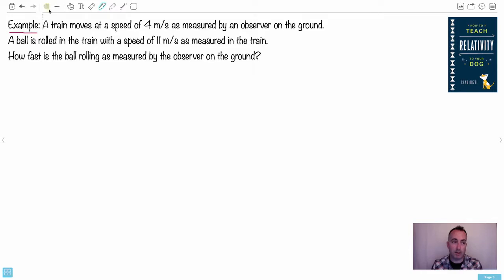So I want to show you an example, the world's most boring example. Let's do it with a train. I like this - how to teach relativity to your dog. So let's say we've got a train here. It's moving at a speed of 4 meters per second, as measured by an observer on the ground. So here's me on the ground watching this train move. So in this case, this speed is going to be 4 meters per second. That's going to be V.